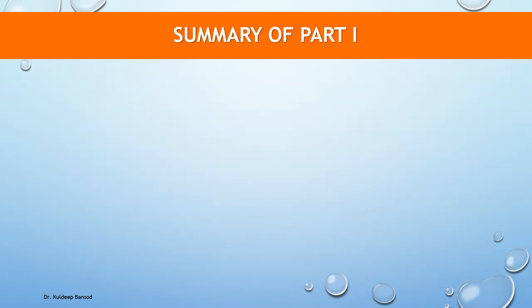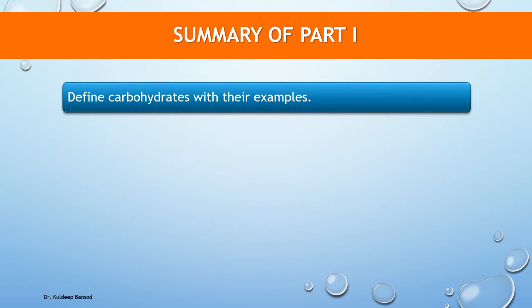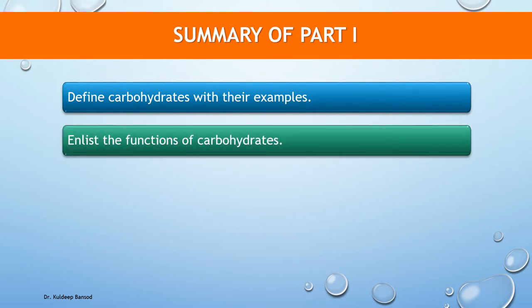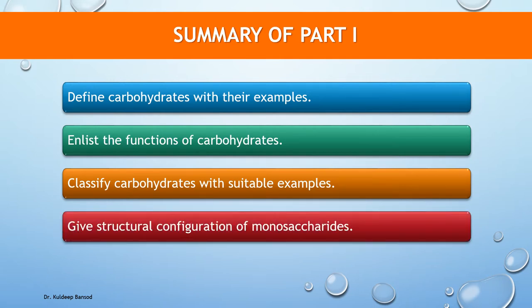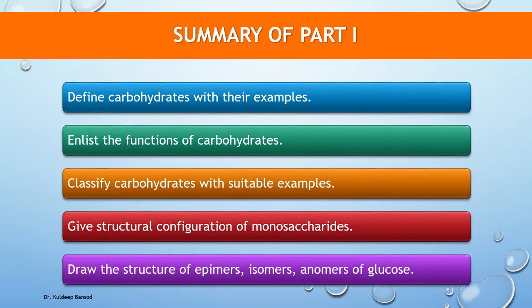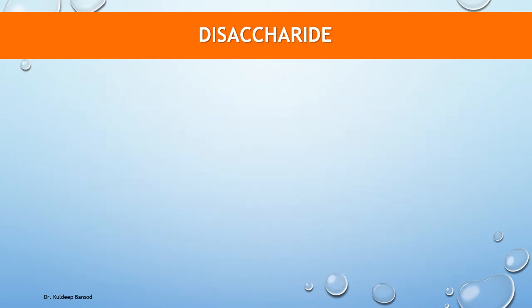In the first part, we studied the definition of carbohydrates, their classification, functions, structural configuration of monosaccharides with special emphasis on glucose and fructose, and various structures of epimers, isomers, and anomers of glucose. In this part, we will discuss disaccharides and polysaccharides. Saccharides are classified into three types: mono, oligo, and poly.